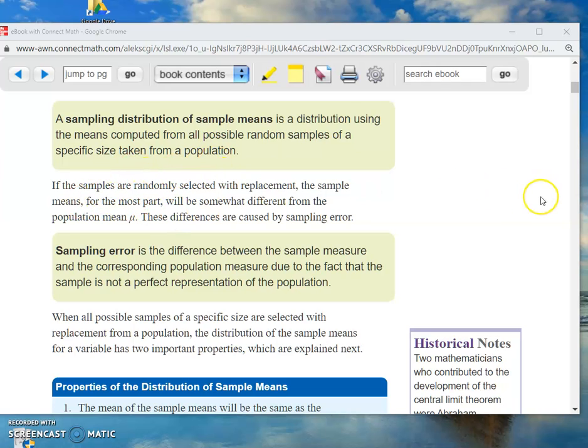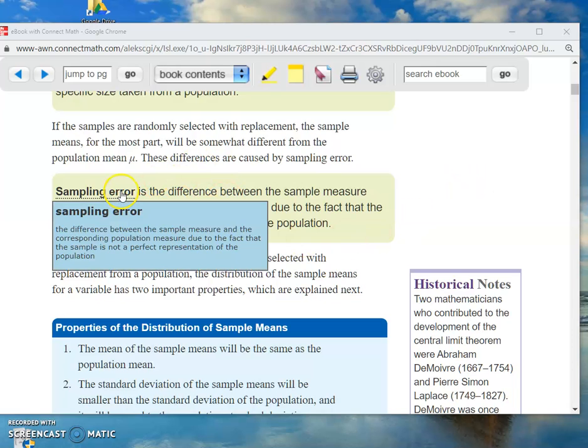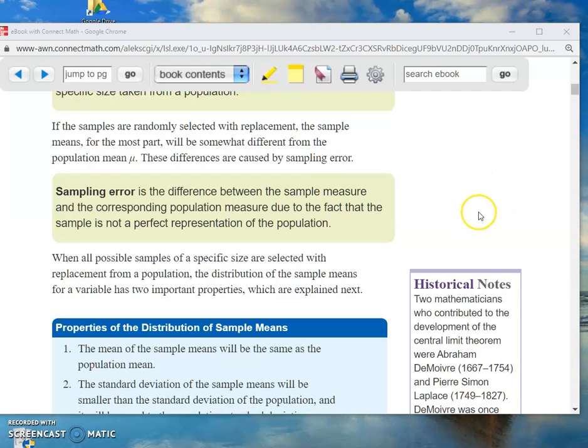Now, here's something else. If the samples are randomly selected with replacement. Now, that doesn't make any sense, right? I mean, how can you have with replacement? If you pick 30 guys and you measure their triglycerides, you're not going to put that guy back in the group, right? You've already measured him. But this is a mathematical fiction here. The samples are selected, randomly selected, with replacement. The sample means, the X-bars, in other words. So the sample means, the sample X-bars, for the most part, will be somewhat different from the population mean. That goes without saying, right? You're never going to have it exactly the same. It's going to be a little bit different from the population mean, which we call mu.